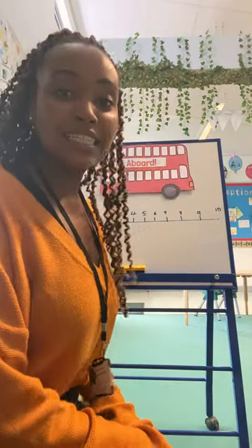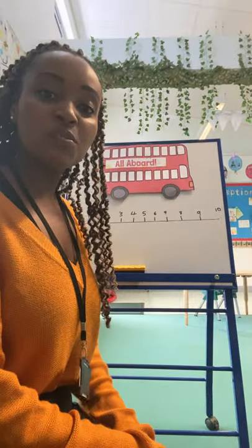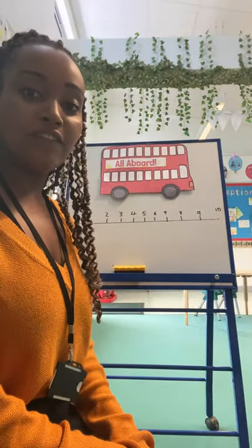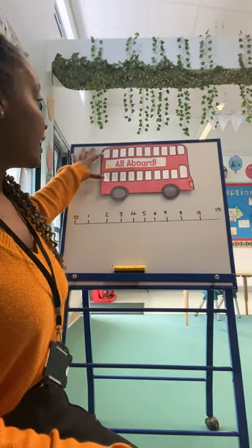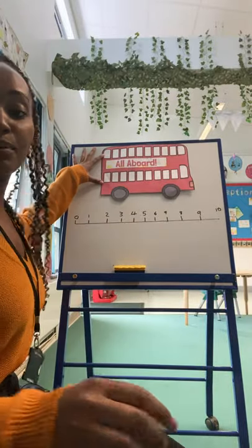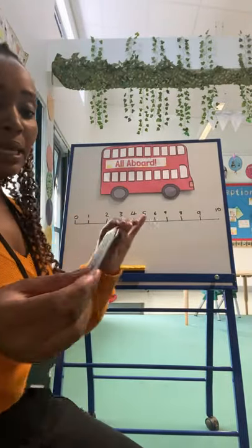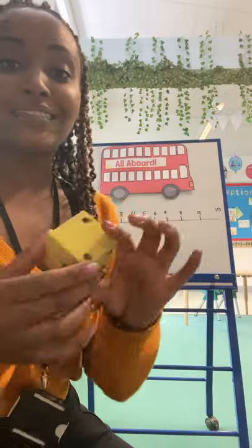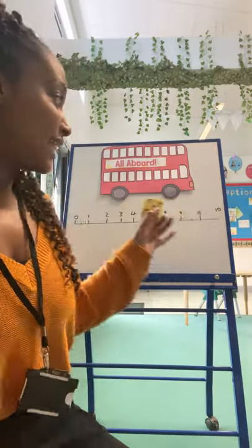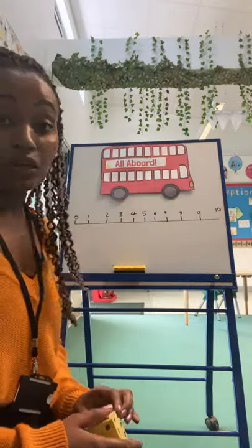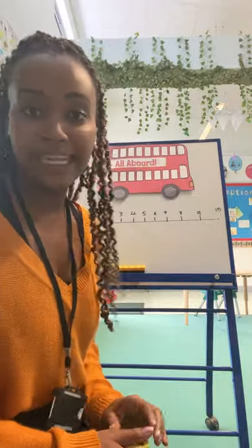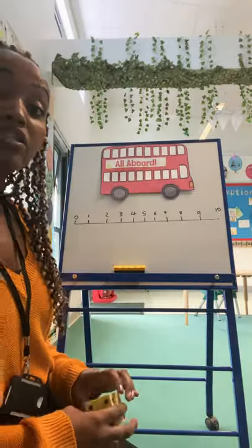Good afternoon reception. Today we are going to be playing a really fun addition and subtraction game using a double decker red bus, people who get on and off of the bus, and a dice. We can get this game from Twinkle and we can print it off and it's really really easy to play, so I'm going to show you how we're going to do that.